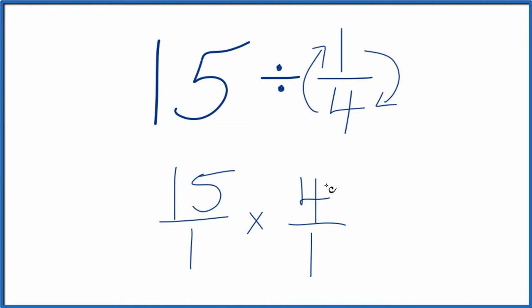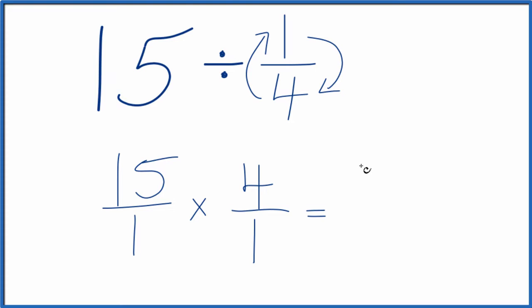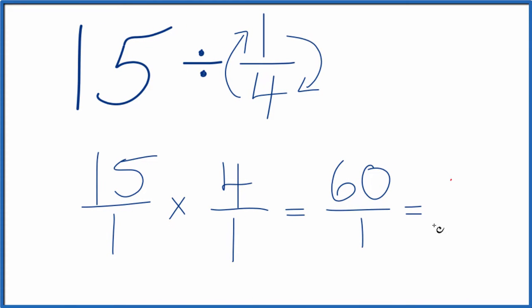And now, when you multiply fractions, you multiply the numerators and then the denominators. So 15 times 4 is 60. And 1 times 1 is 1. And 60 divided by 1, that's just 60.